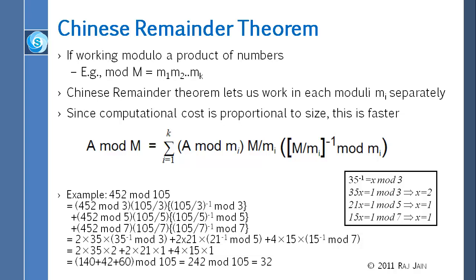For each of these three mods, we multiply two quantities. The first quantity is big M divided by 3, big M divided by 5, and big M divided by 7. The second quantity is the inverse of that mod 3, inverse of that mod 5, and inverse of that mod 7. Then we add up all of these. So first let's see how do you find out this quantity.